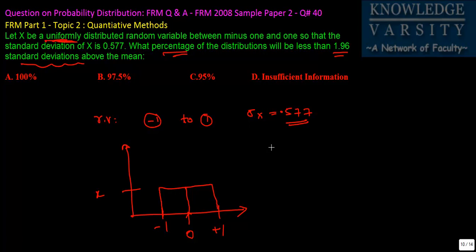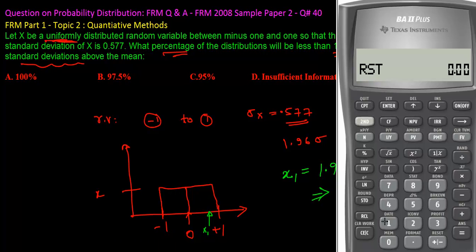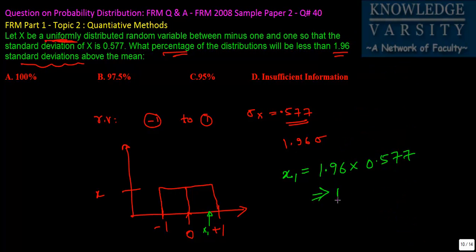They are saying that standard deviation is this much and what percentage will be less than 1.96 standard deviations above the mean. You have to compute what will be this x value which is above the mean. Let's say x1 which is above the mean. x1 will be 1.96 times 0.577. If you compute using your calculator, 1.96 times 0.577 comes to 1.13. So your x1 value is 1.13.